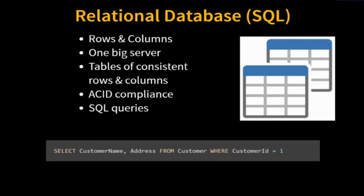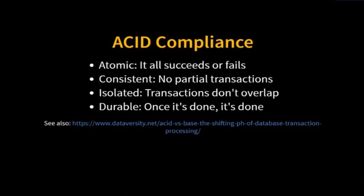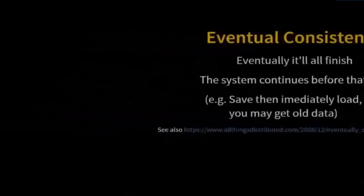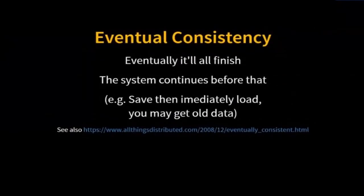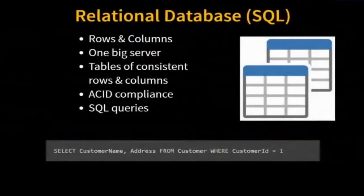We also have ACID compliance. Atomic — it all succeeds or fails. Consistent — no partial transactions. Isolated — transactions don't overlap. And durable — once it's done, it's done. With ACID compliance, we know that the entire set will either succeed or fail together; we won't get a partial transaction or half the data. By comparison, with eventual consistency it'll all finish eventually — but if we write and then immediately read, we may not get the right answer. For example, if I walk into Starbucks and immediately check my statement, I probably won't see that charge. But by end of month, my credit card statement will show all the trips to Starbucks. In SQL, we have ACID compliance — as soon as we finish writing, we can read and we're good to go.